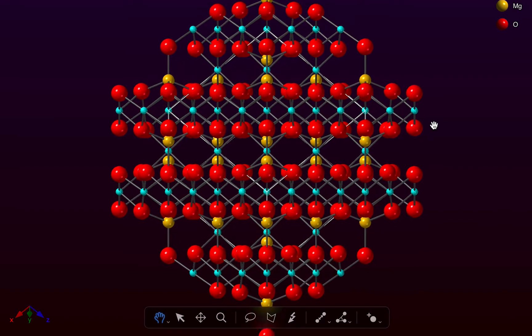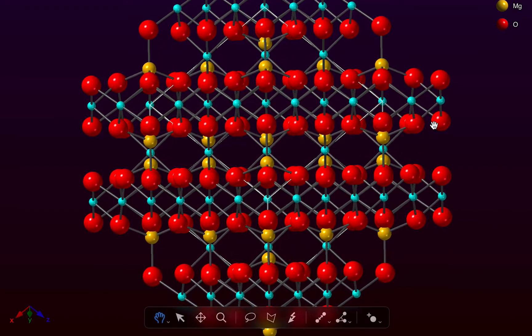Now we're going to scale this and we can see looking along this direction that we have layers of oxygen atoms in red with the metal atoms in cyan and yellow arranged between the layers.